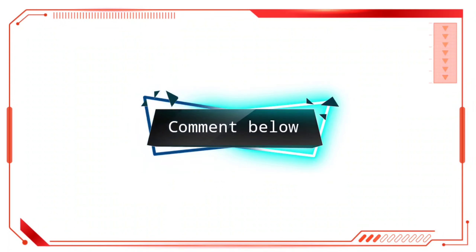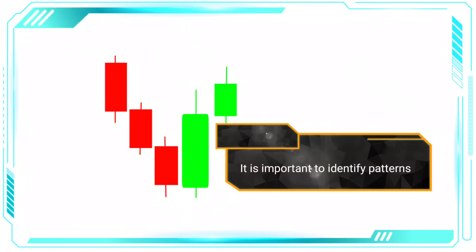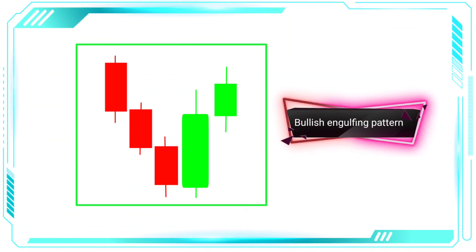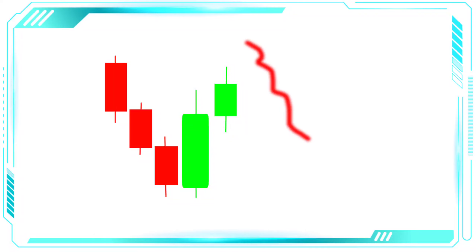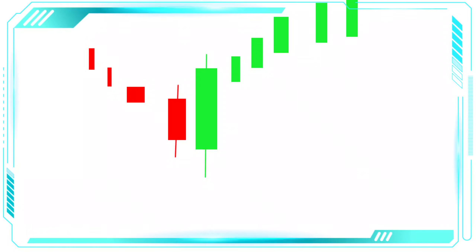Let's explore the Bullish Engulfing Candlestick Pattern. In the world of trading, it's important to be able to identify patterns that can help you make more informed decisions. The Bullish Engulfing Pattern is a two-candlestick pattern that occurs at the end of a downtrend. The first candlestick is a bearish candle, followed by a larger bullish candle that engulfs the bearish candle. The Bullish Engulfing Pattern is a strong indication that the trend is about to reverse, signaling a shift in momentum from bearish to bullish and can be a powerful tool in identifying potential buying opportunities.